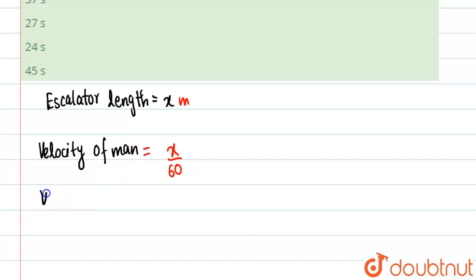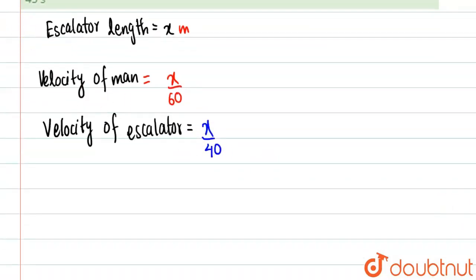Velocity of man plus escalator will be equal to x by 40. So velocity of man plus escalator, basically velocity final, means when man is also walking and the escalator is also moving, will be equal to x by 60 plus x by 40.